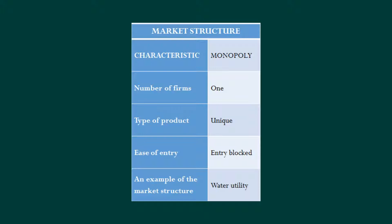Different books will come up with different lists, but we're going through four possible sources that would block entry. The significance of blocked entry relates to what we discussed in perfect competition in the long run: as you move toward the long run, the existence of profits told other firms to come on in. As firms entered, market supply increased, equilibrium price dropped, and you could not maintain profits in the long run. If you could have blocked entry, though, you could maintain those profits — and that's the significant factor for monopoly.